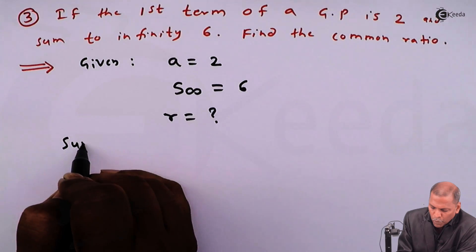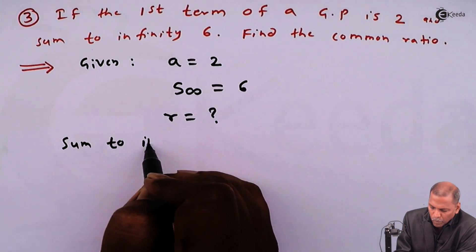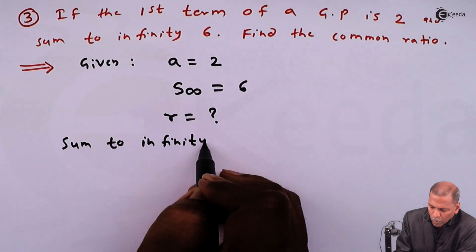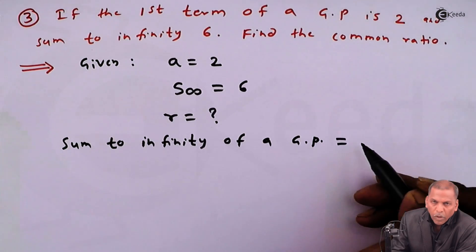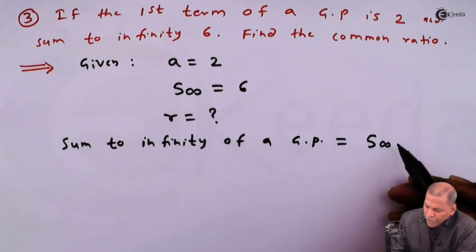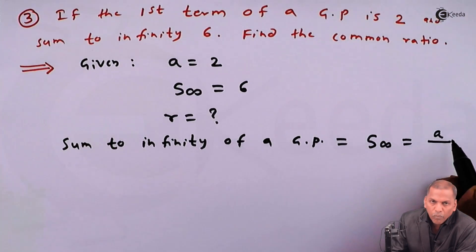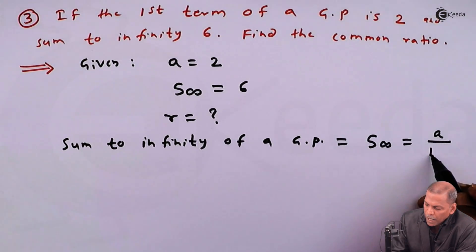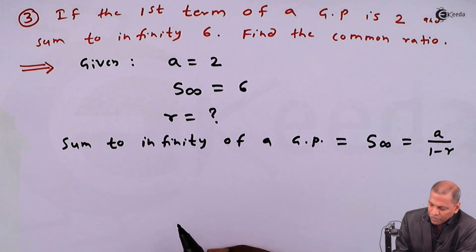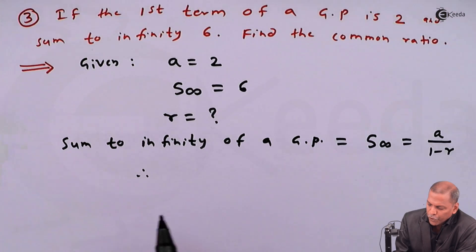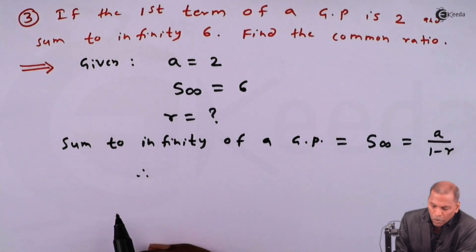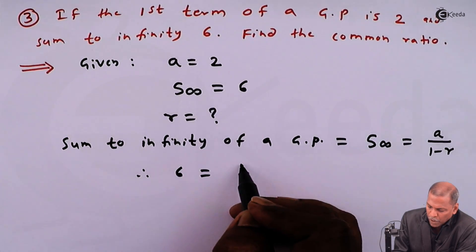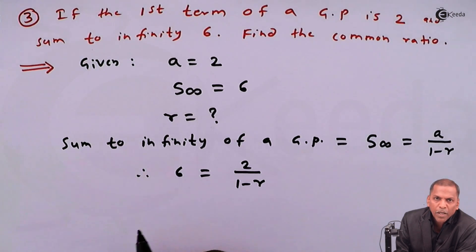Now sum to infinity of a GP, that is S infinity, equals the formula a upon one minus r. Therefore, the next step will be for S infinity we substitute six and for a we substitute two. So we have six is equal to two upon one minus r.